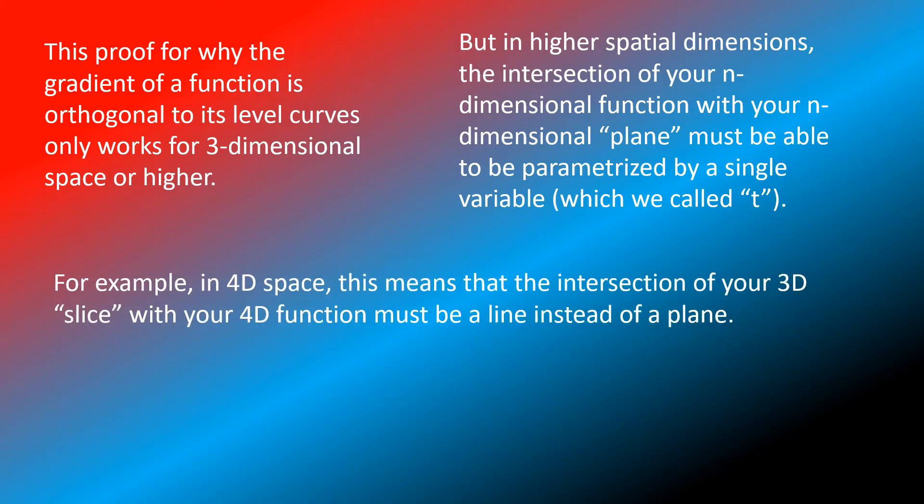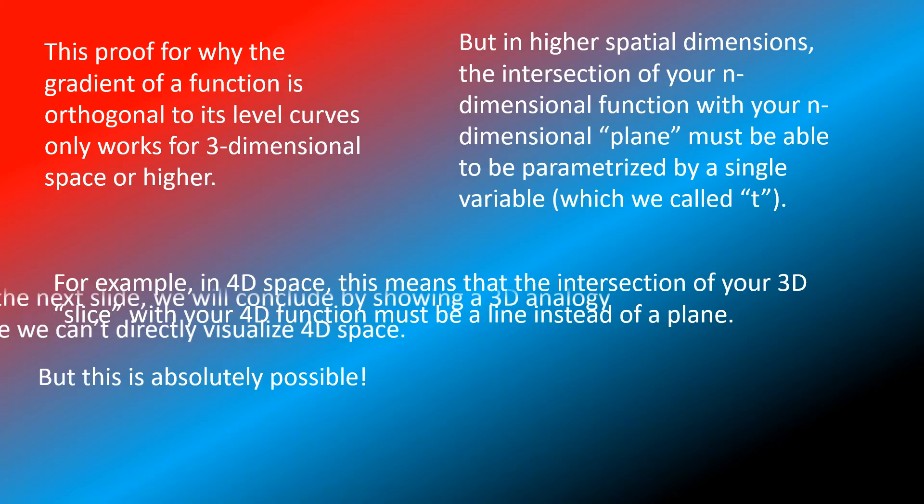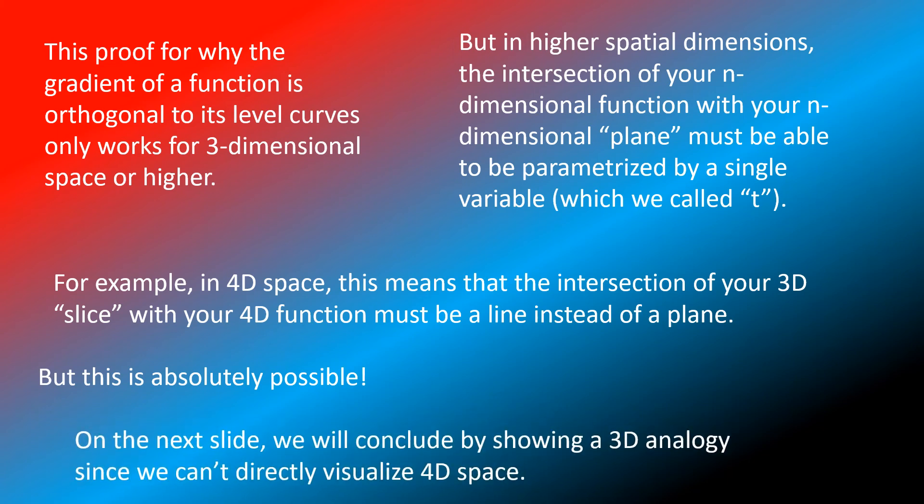For example, in four-dimensional space, this means that the intersection of your 3D slice with your 4D function must be some kind of line instead of a plane, because usually in four dimensions, your intersection would form a plane instead of a line. But we want the special case where it forms a line, and this is true for higher dimensions as well.